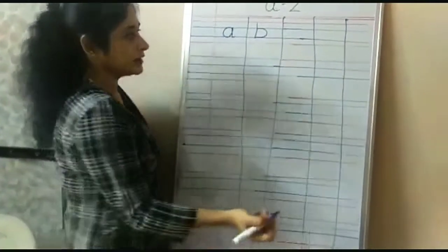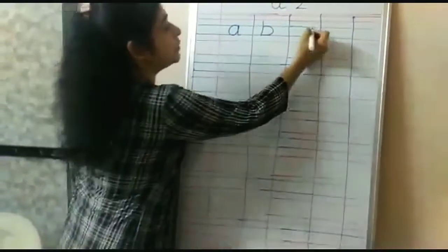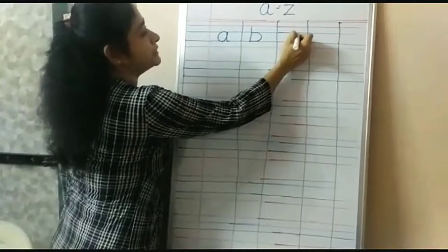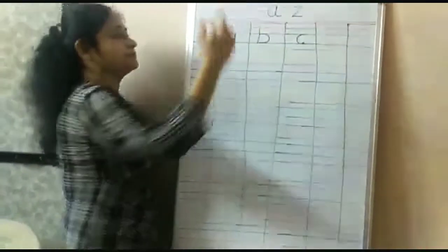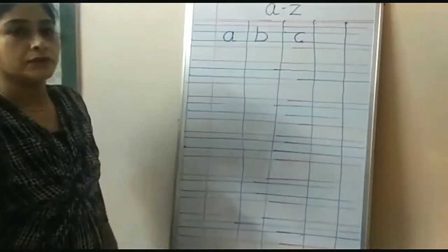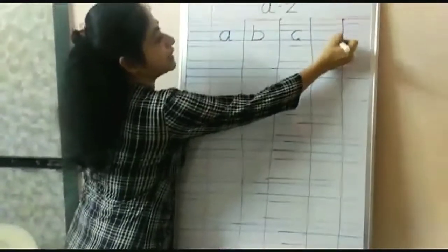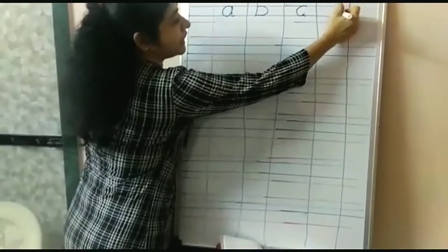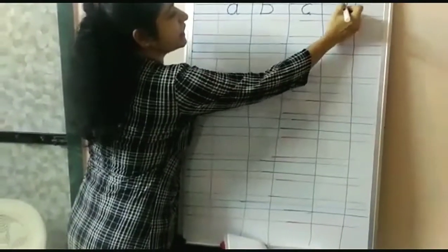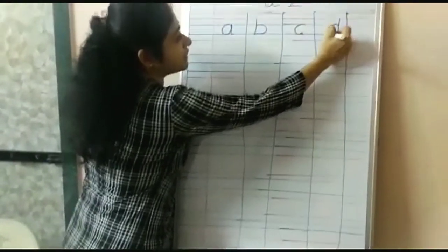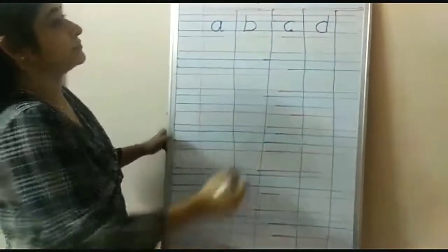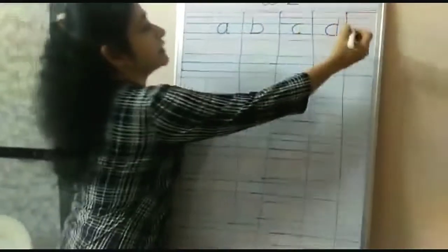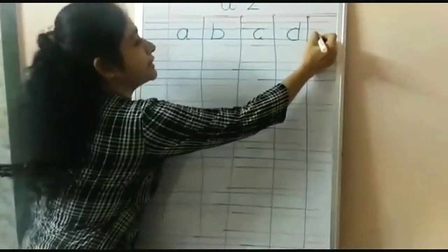Now, blue line to blue line — C. Now, red line to blue line. Make a standing line and make a round from this side — D.